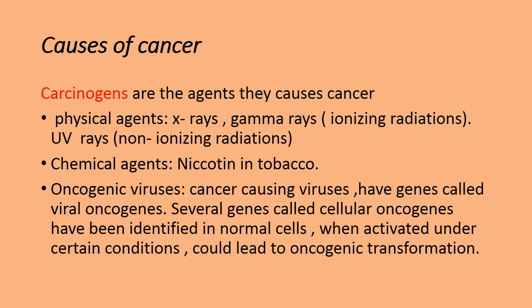One more category is biological agents. We have seen physical agents and chemical agents; the third type is biological agents. The best example is oncogenic viruses. There are certain viruses that act as carcinogens. Why do they act as carcinogens? They consist of certain genes called viral oncogenes. When these genes are introduced into a normal cell, they will convert the normal cell into a cancer cell. In some normal cells, researchers have also identified certain genes called cellular oncogenes.